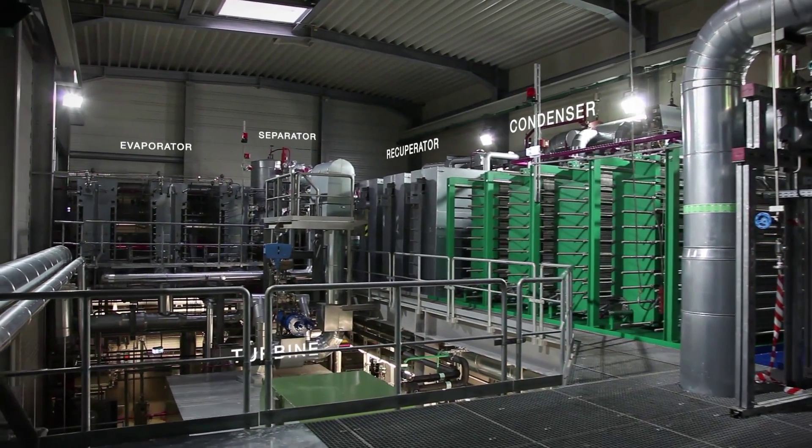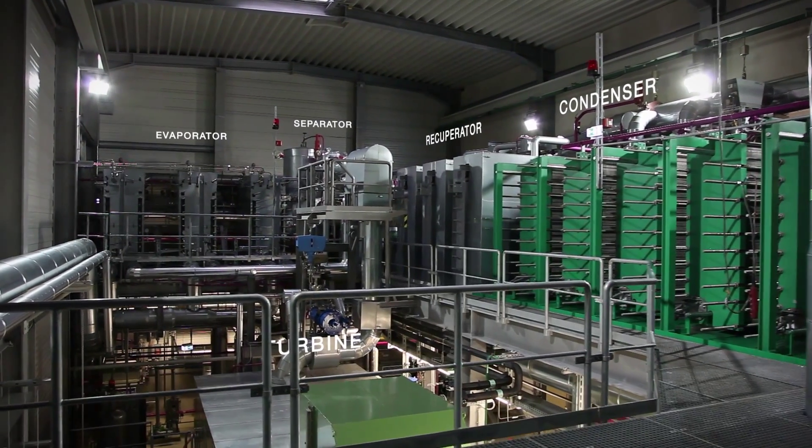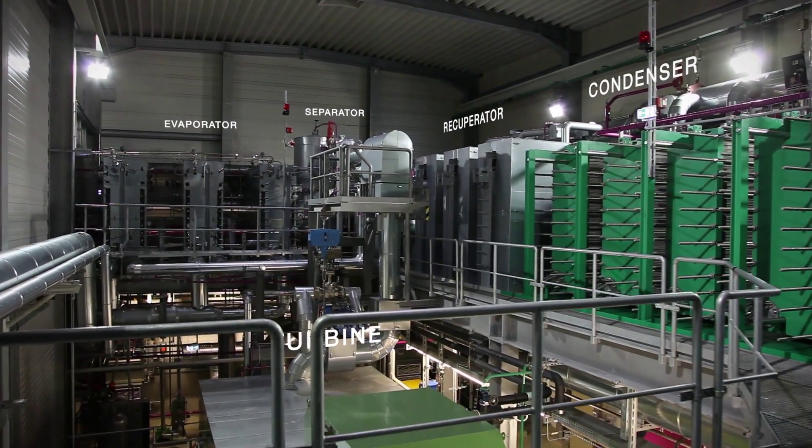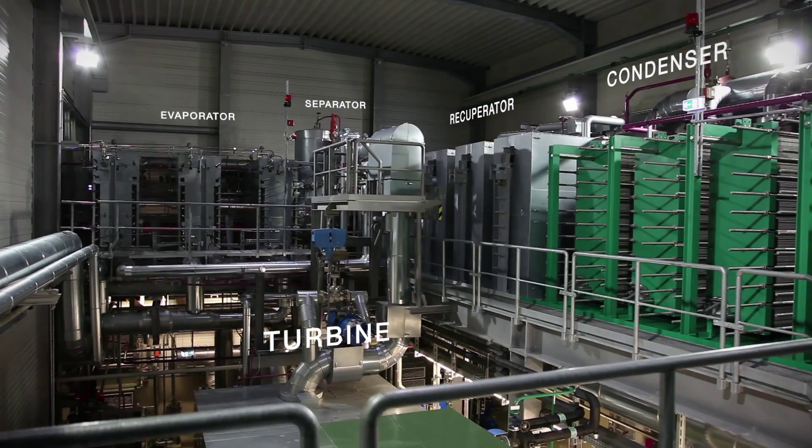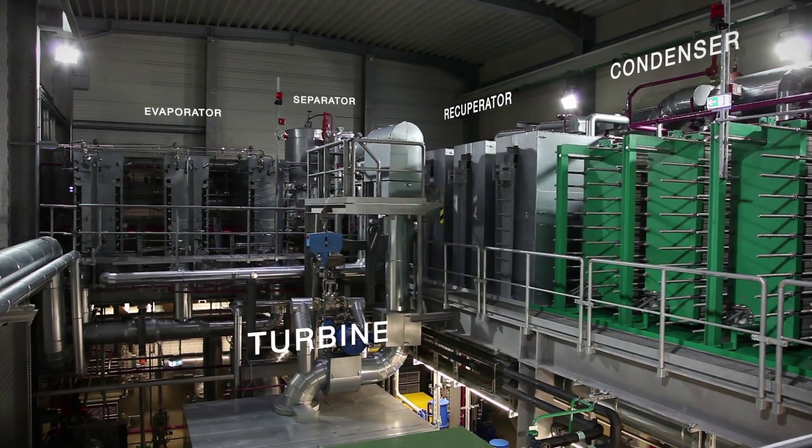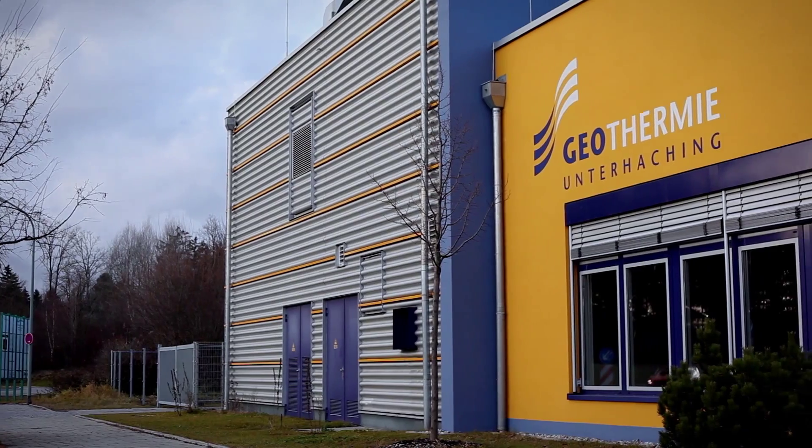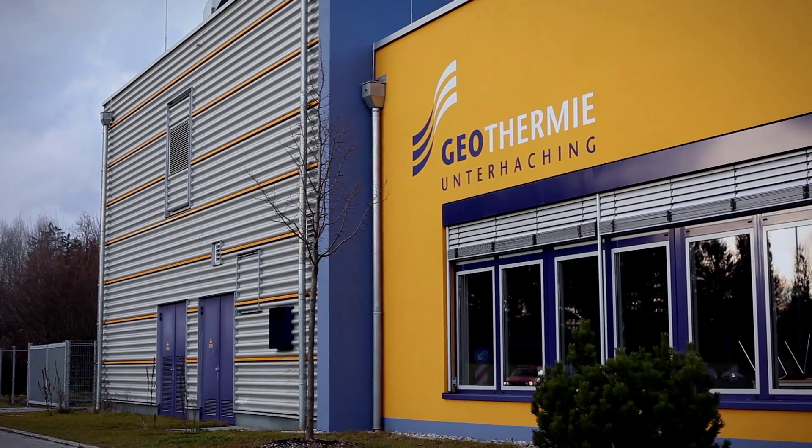You will have noticed that the Kalina Cycle is a completely closed-loop system, and no ammonia is ever released to the environment. In the case of an accidental release, ammonia is vented through pipes to a large tank of water, where it is absorbed and contained.